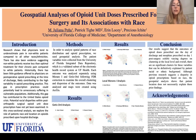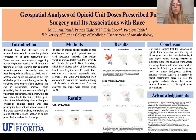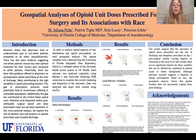In this study, we analyze spatial patterns of race distribution and opioid prescription using ArcGIS. We analyze each outcome using Moran's I and Getis-Ord following FDR correction to examine the overall clustering and dispersion of the outcomes. Data was analyzed and the maps were created.